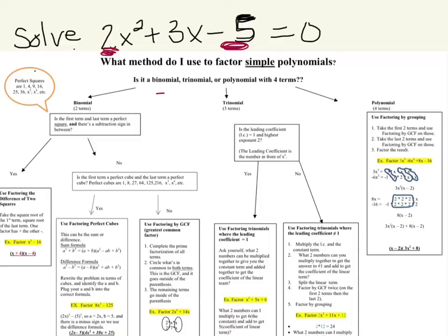The next step says: what two numbers can you multiply together to give you the answer to number 1? So we're looking for what two numbers multiply together to give us negative 10.